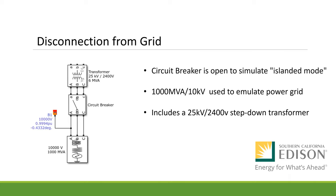Now, disconnection from grid. Here we have a thousand MVA power source used to emulate the traditional power grid. Remember this model is expected to be disconnected from the microgrid. When the circuit breaker is open, the system is in islanded mode. This also includes a 25kV to 2400 step-down transformer to lower the voltage down for consumer use.